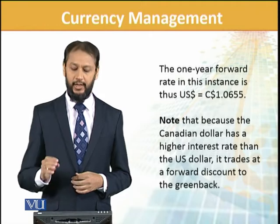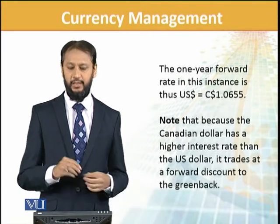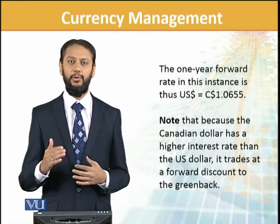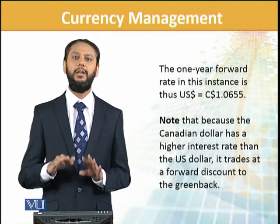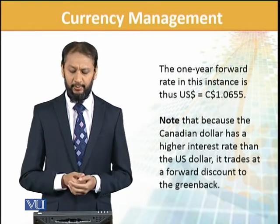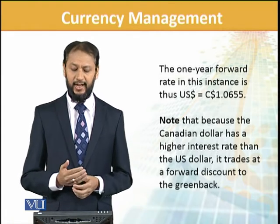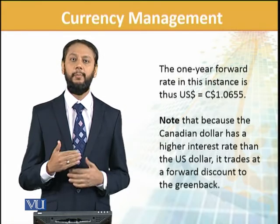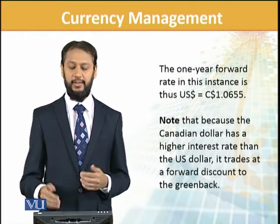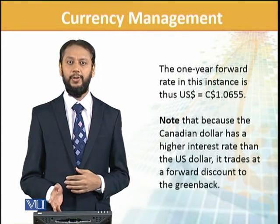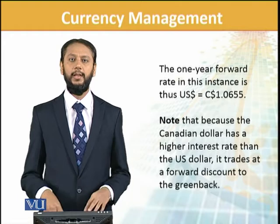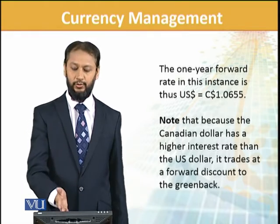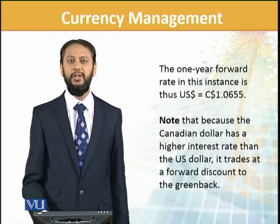Now whatever currency movement occurs — whether the Canadian dollar goes to 0.9, 1.1, or 1.2 — we will be locked at 1.065. This is the beauty of the forward contract: it locks us in and the uncertainty of currency is eliminated. Note that because Canadian dollar has a higher interest rate than US dollar, that impact is reflected in the rate change. This is the forward strategy — you lock yourself in at the forward rate and currency changes have no impact on you, though you may have preferred 1.05 but must lock at 1.0655.